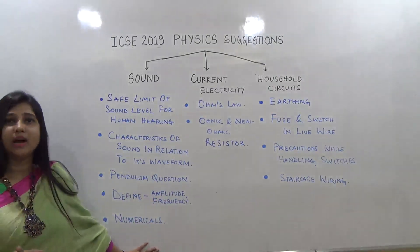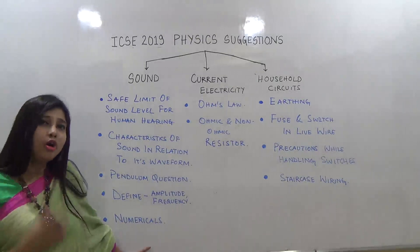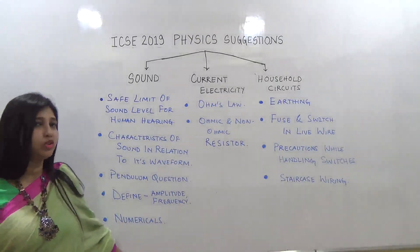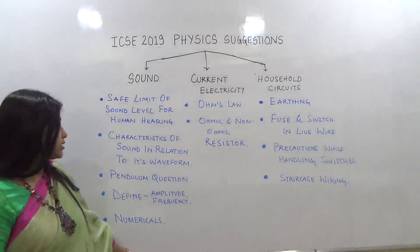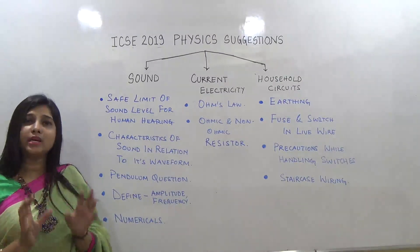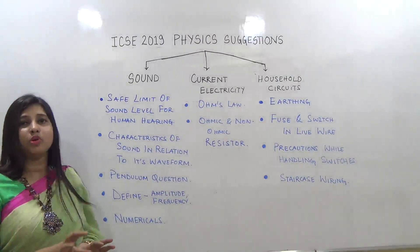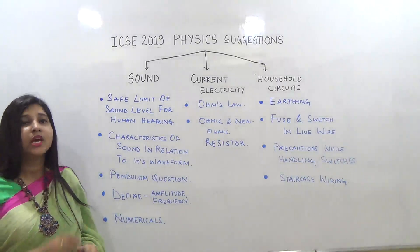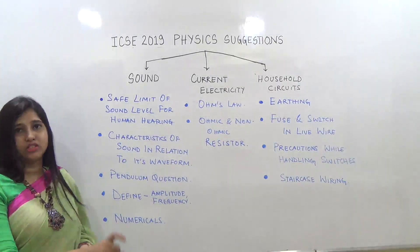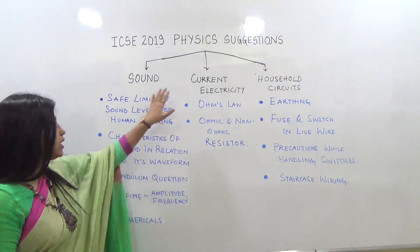Definitely there will be numericals on echo, or a numerical on distance, time, and speed. I will mention all the numericals and important questions I have identified in the description box — you can find them there.